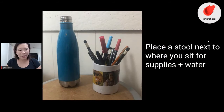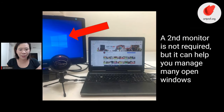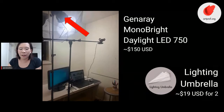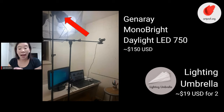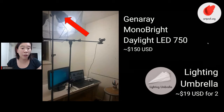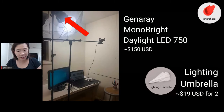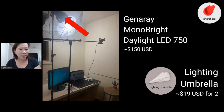The stool I put next to me for supplies and water is definitely necessary for live streams. The second monitor is really helpful because you can manage lots of open windows. These are the two items I recommend for lighting. If you guys want links for these items, they are all in the video description below — Amazon affiliate links you can just click on. ArtProf gets a small percentage to help fund our content.